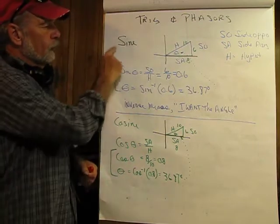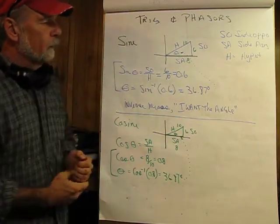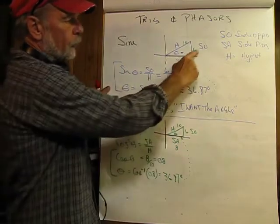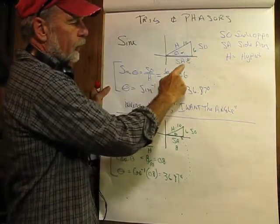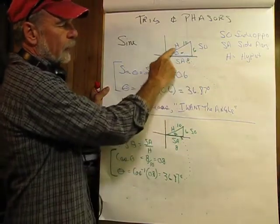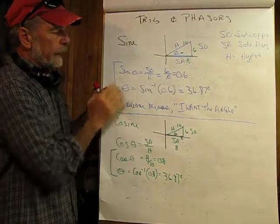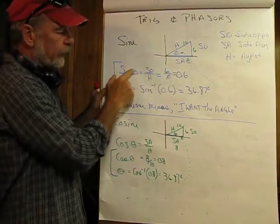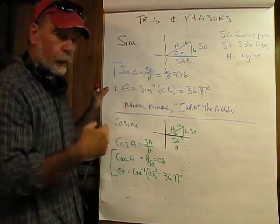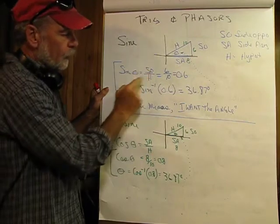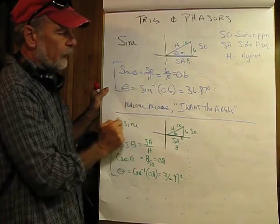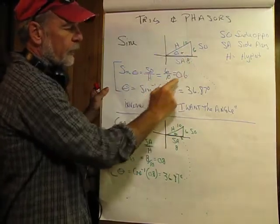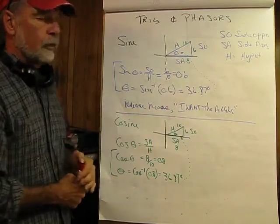We're going to start with the sine function. What we have here is the side opposite, the side adjacent, and the hypotenuse. In the sine function, the sine of an angle is equal to the ratio of the side opposite to the hypotenuse, which would be equal to 6 divided by 10, which is 0.6.